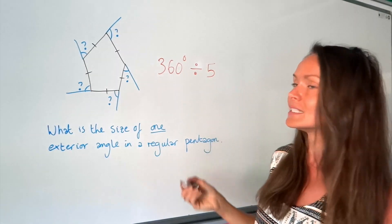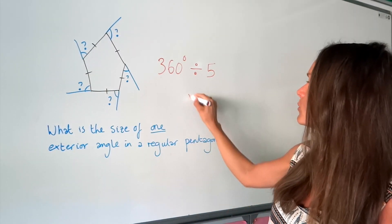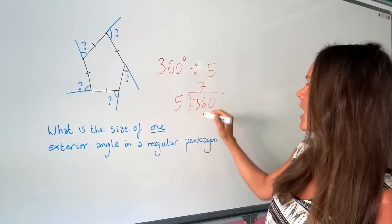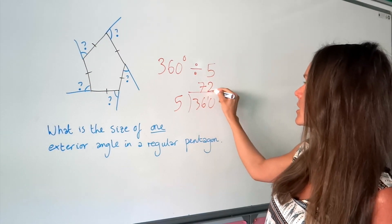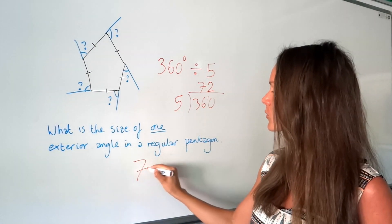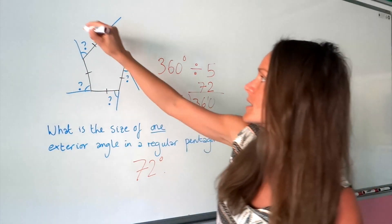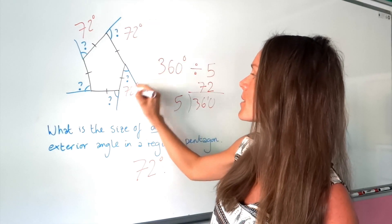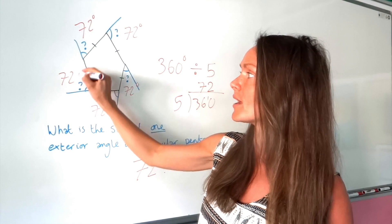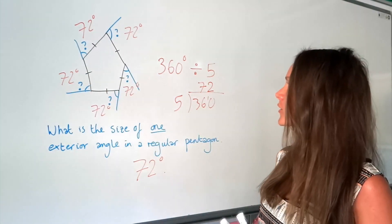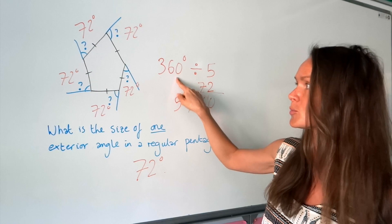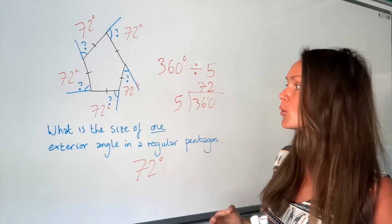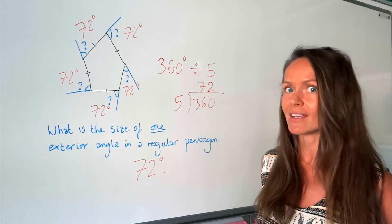We have to divide 360 by five. Fives into 36 is seven with one remainder, fives into 10 is two. So the answer is 72 degrees — each of these exterior angles is 72, because it's a regular pentagon. It's just always 360 degrees divided by however many there are, and that will work for any regular polygon, any regular shape.